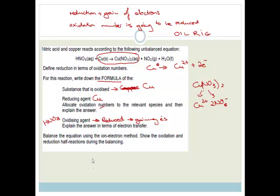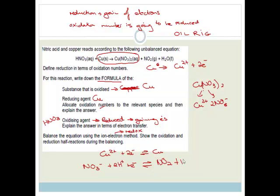Now it says balance the equation using the ion-electron method — show the oxidation and reduction half reactions before balancing. We're going to use our redox table. From the redox table, we can see that Cu²⁺ + 2e⁻ is in dynamic equilibrium with Cu. We also have NO₃⁻ + 2H⁺ + e⁻ in dynamic equilibrium with NO₂ + H₂O. So we have Cu, Cu²⁺, NO₃⁻ with 2H⁺ forming NO₂ and water — it's all starting to look very good.